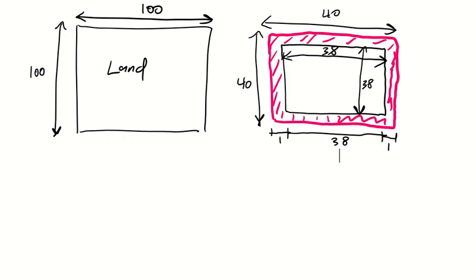All right, ladies and gentlemen, let me demonstrate all these building ratios that we talked about in class via this simple example. In this example, we have a land with dimensions of 100 by 100, and then we have a building with dimensions of 40 by 40, taking into account the wall.